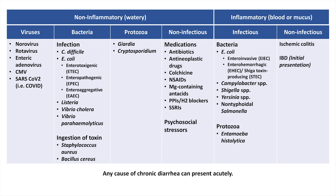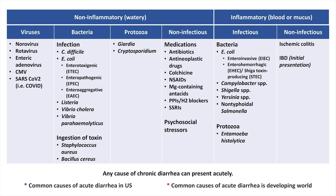Another important point is that these two broad categories are not precise. For example, pathogens more classically associated with inflammatory diarrhea can cause watery diarrhea early in their course, and severe C. diff infections along with all forms of E. coli can be associated with sepsis. Overall, the most common cause of acute diarrhea in both the United States and the rest of the world is believed to be norovirus.